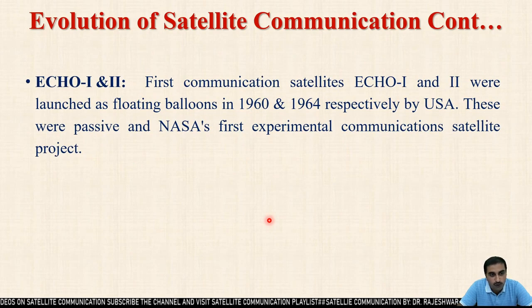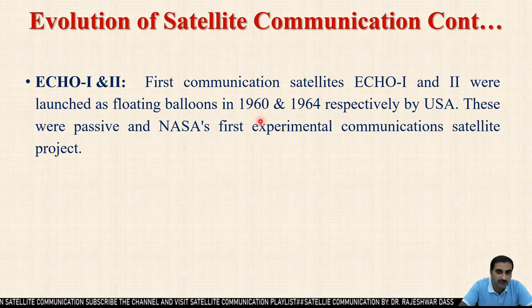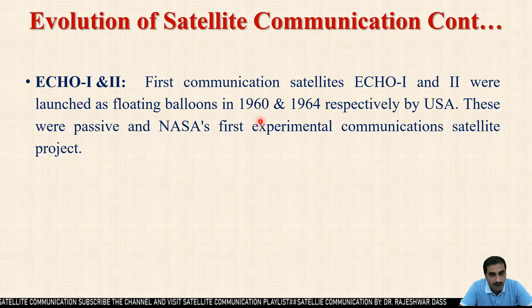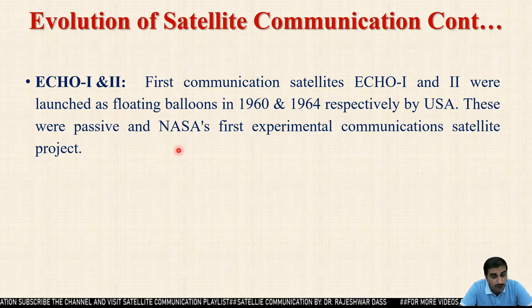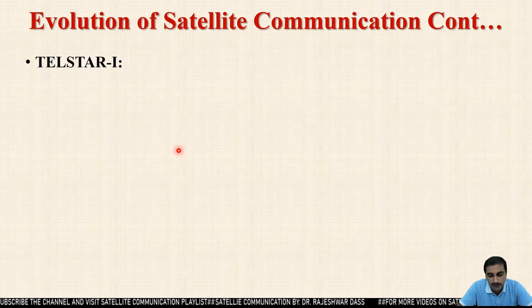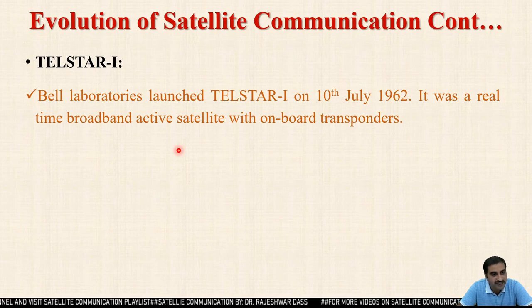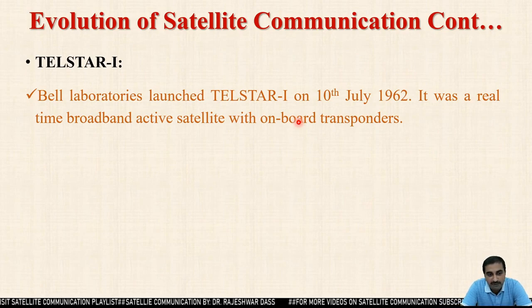After SCORE, ECHO-1 and ECHO-2 came into the picture. ECHO-1 was launched in 1960 while ECHO-2 was launched in 1964. Both satellites were launched by the USA and were passive type satellites. This was NASA's first experimental communication satellite project. After ECHO-1 and ECHO-2, the next series of satellites emerged — Telstar, launched by Bell Laboratories on 10th July 1962.